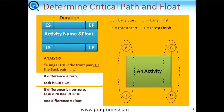Going back to early start, early finish, latest start and latest finish — very often rather than just drawing a rectangle, you'll have a node like this where the top-left number is the earliest start, top-right is the earliest finish, bottom-left is the latest start, and bottom-right is the latest finish. You'll normally have your activity name in the middle, and float is sometimes inserted there too. When you do your forward pass, you're calculating early start and early finish; when you do your backward pass, you're calculating latest finish and latest start.